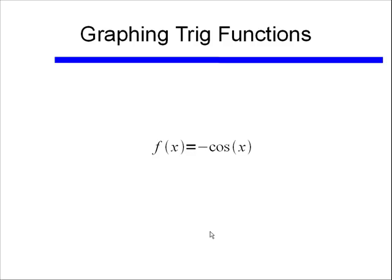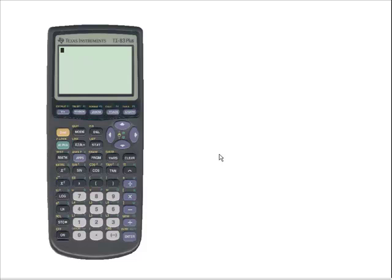Let's look at something like f(x) equals negative cosine of x. Remember if we multiply our sine or cosine by a negative one, what that did was reflect our sine and cosine over our x-axis. So let's see if this works.